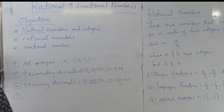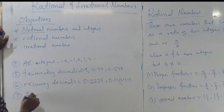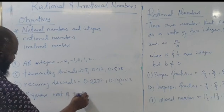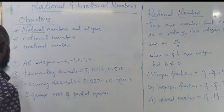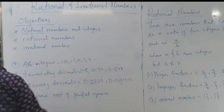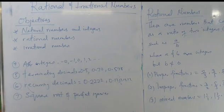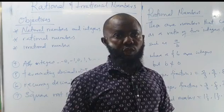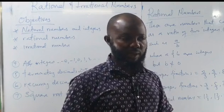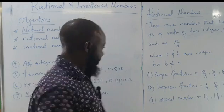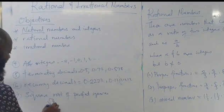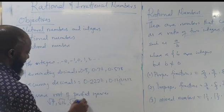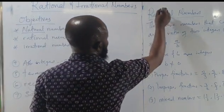The last example of rational numbers is square roots of perfect squares. Perfect squares are numbers whose square root gives you a whole number, and that whole number is an integer. So for example: square root of 4, square root of 16, square root of 25, square root of 36 — all of these are under rational numbers.